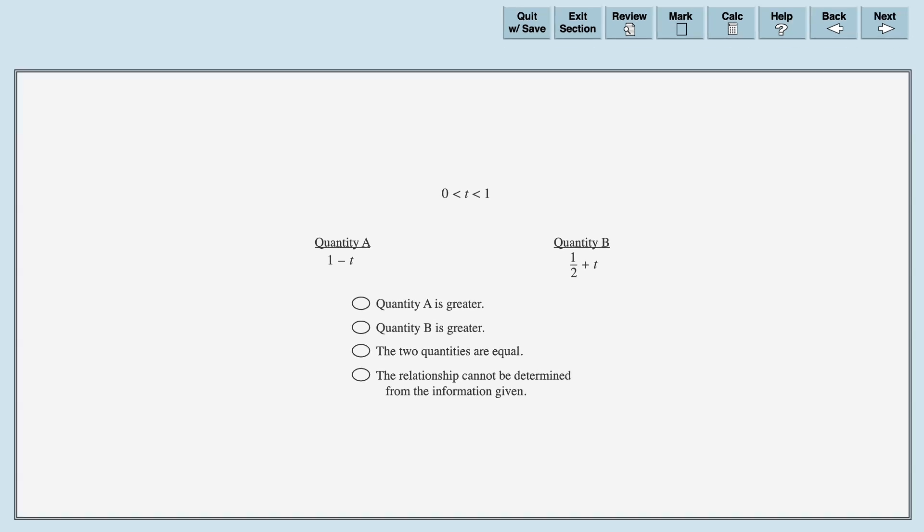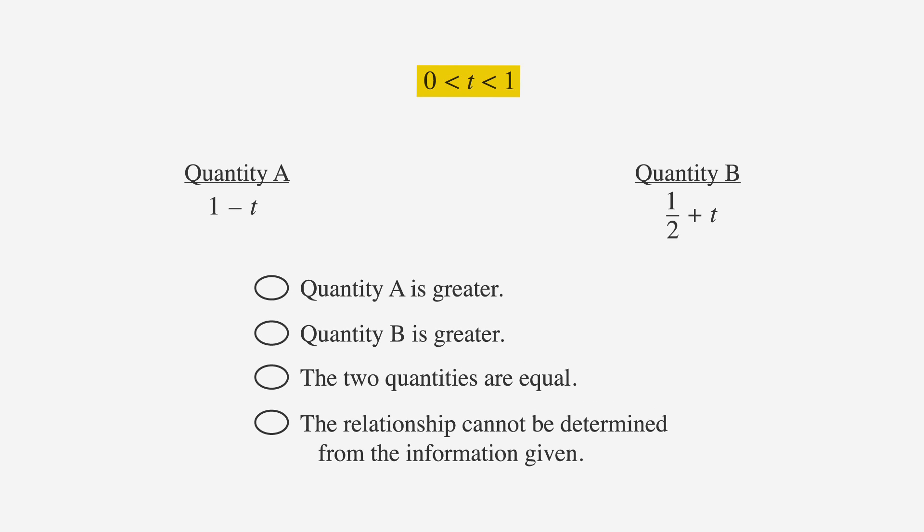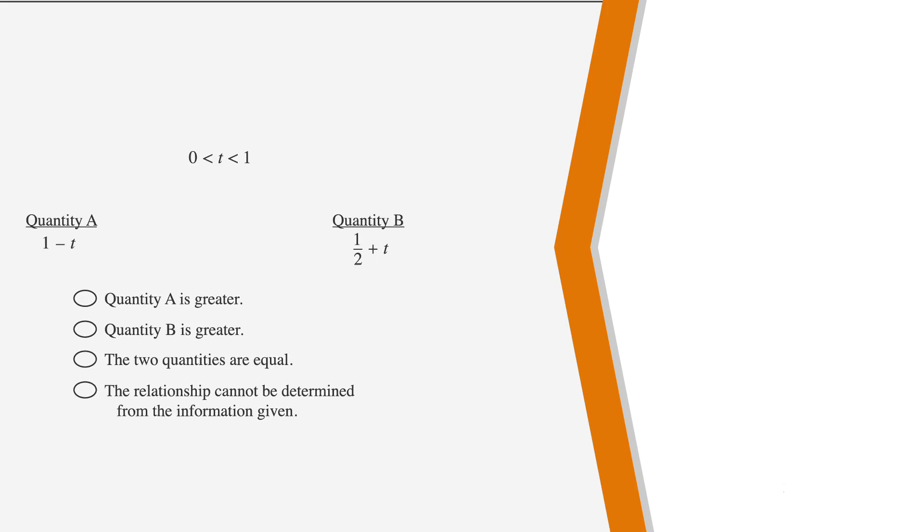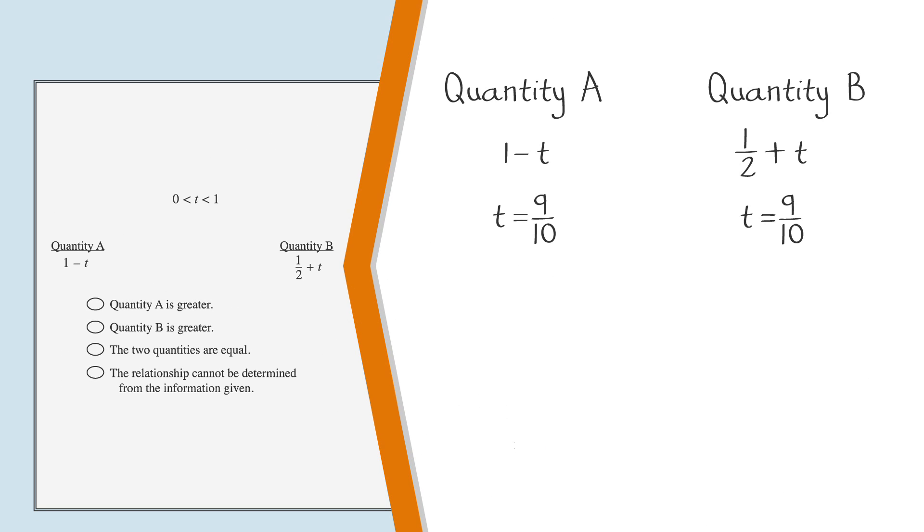Here, we have two inequalities that, when combined, mean t can be anywhere between 0 and 1. First, t equals 9 tenths, which is close to 1. Plugging that value for t into both columns, we see that quantity B is larger.